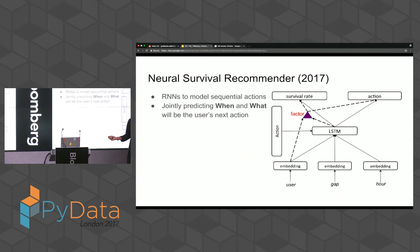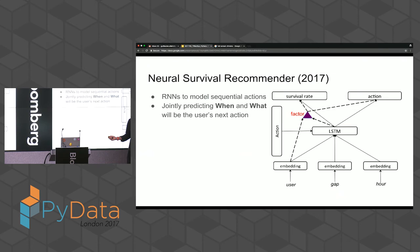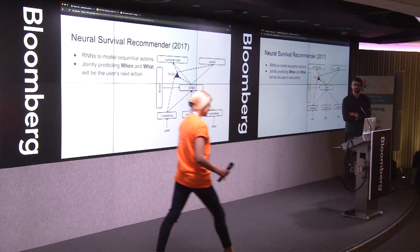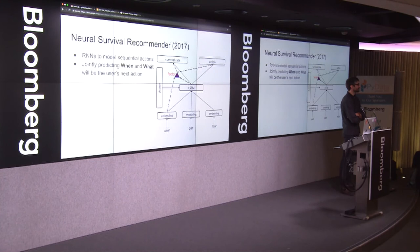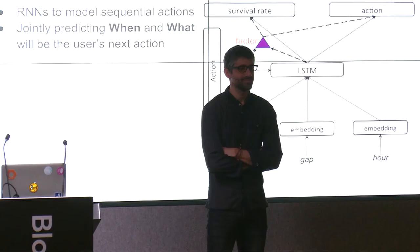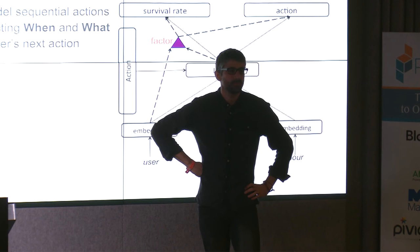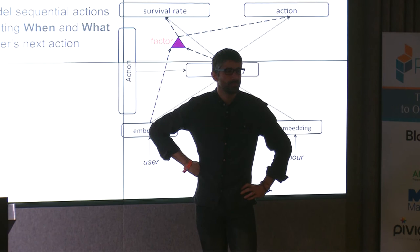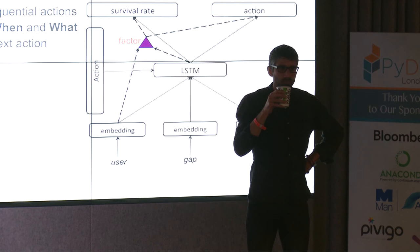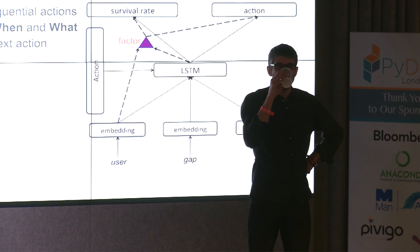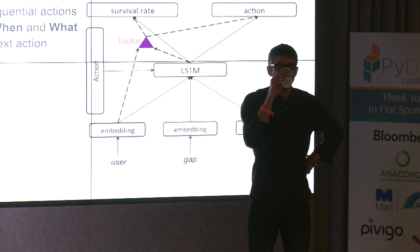Thank you for listening. During Q&A, one audience member asked two questions: first, it would be great to see a comparison between ALS and this feature-enriched approach to measure the improvement from using user and item metadata rather than ratings alone. Second, a more basic question: when building the classifier, how do you construct your training sample — specifically, what do you include as negative examples when a user hasn't clicked?